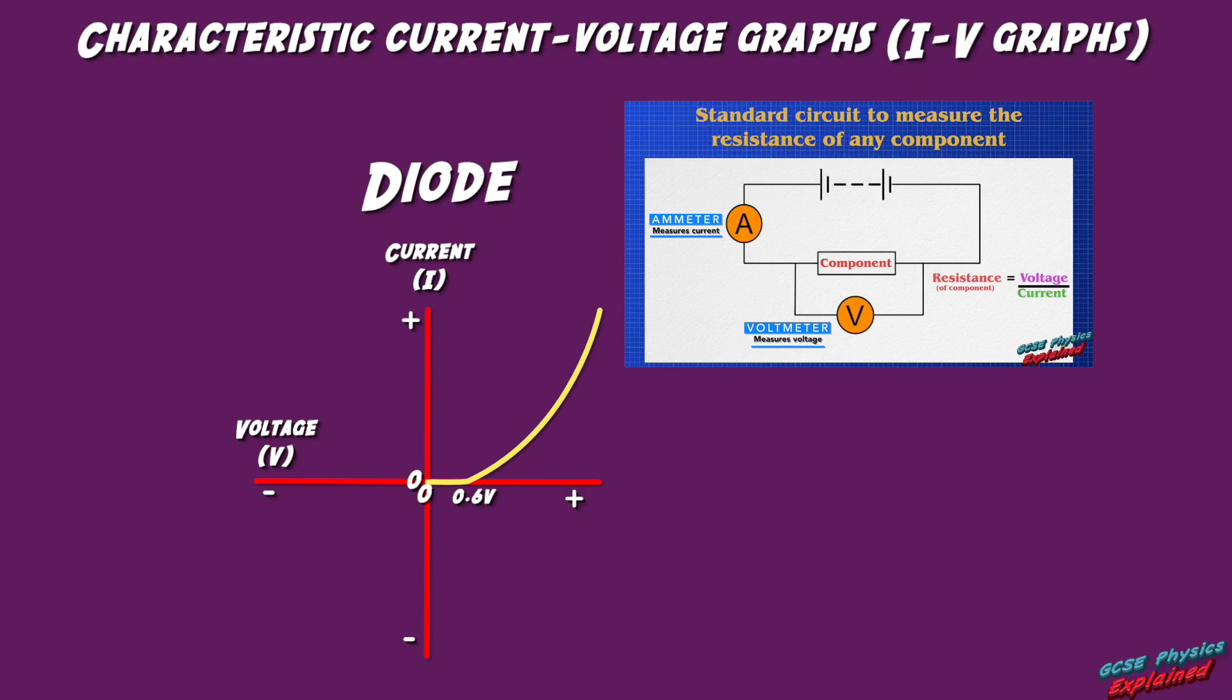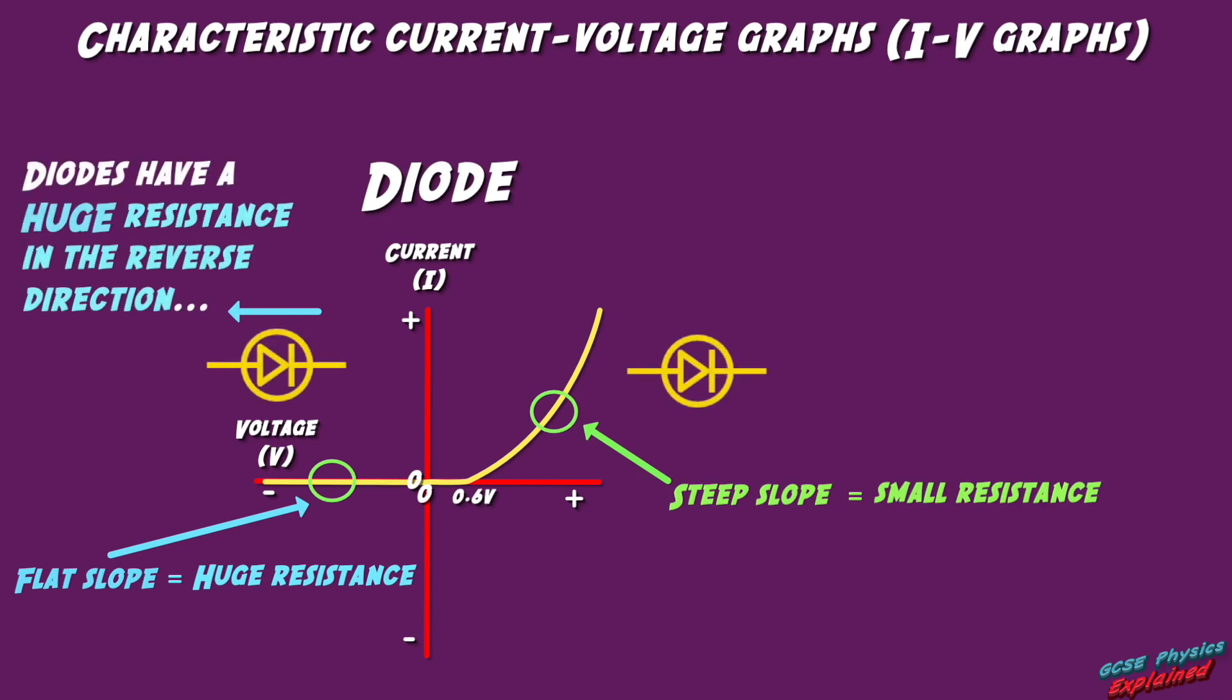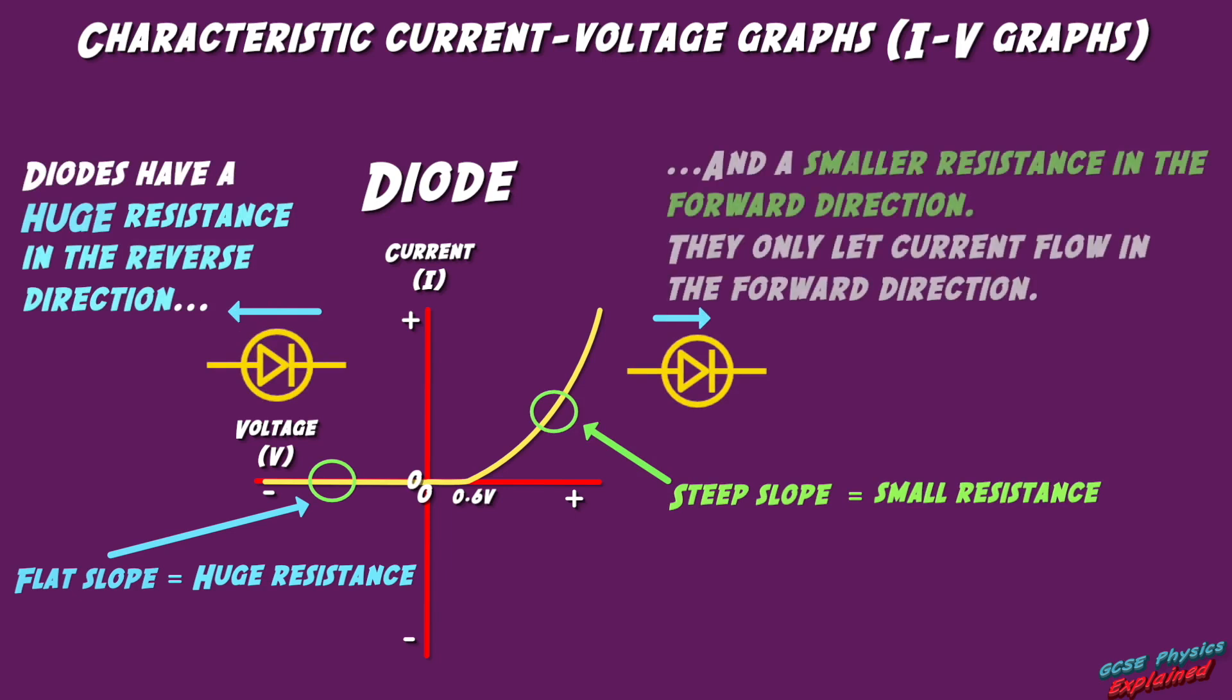If you turn the power source around, so the current tries to flow in the reverse direction, the diode will not allow any current to flow. This is because diodes have a huge resistance in the reverse direction and a smaller resistance in the forward direction.